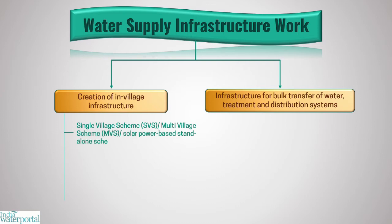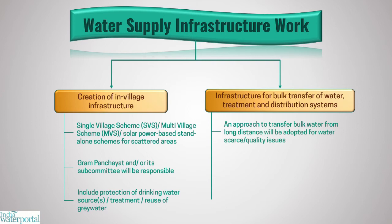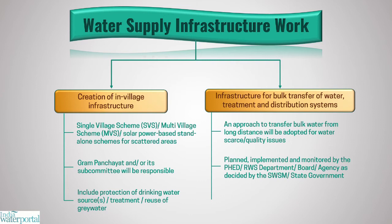The first category will be created through single village schemes, multi-village schemes, or solar power-based standalone schemes for scattered areas, with the Gram Panchayat or its subcommittee responsible to plan, implement, manage, operate, and maintain this — including protection of drinking water sources and treatment and reuse of grey water. In villages with water quality issues and paucity of surface water sources, especially in drought-prone and desert areas, an approach to transfer bulk water from long distances will be adopted, planned, implemented, and monitored by the Public Health Engineering Department or Rural Water Supply Department or any other board or agency as decided by the State Water and Sanitation Mission or the state government.